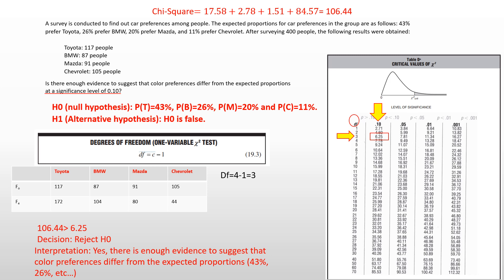The expected proportions — the 43%, 26%, etc. — are not how it is in this group of people. People don't prefer these cars in that distribution. That's the end of the class.